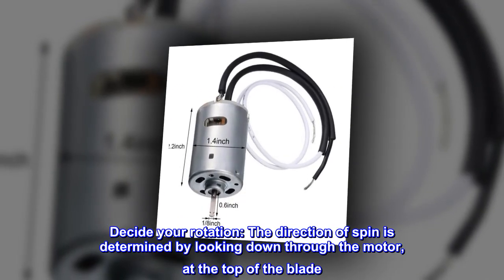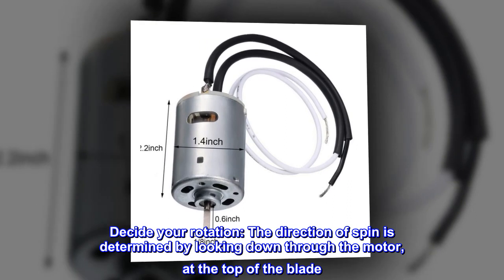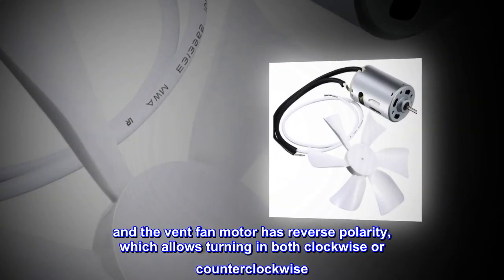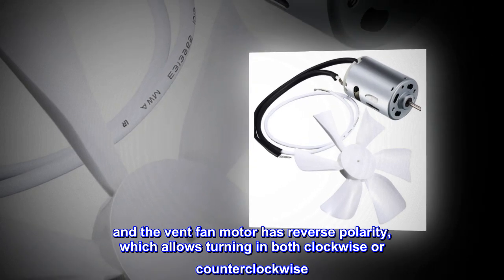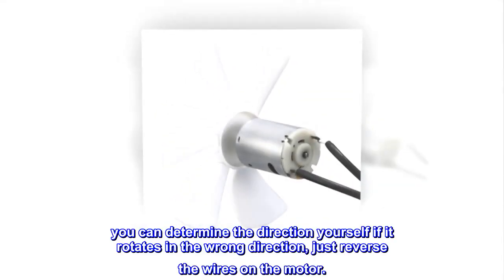Decide your rotation. The direction of spin is determined by looking down through the motor at the top of the blade. The vent fan motor has reverse polarity which allows turning in both clockwise or counterclockwise.